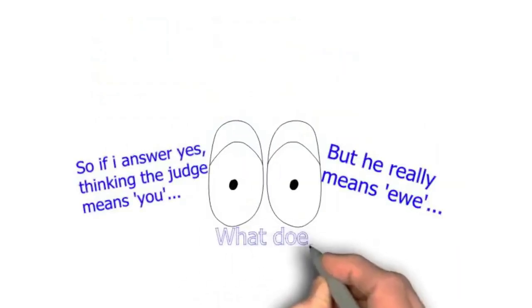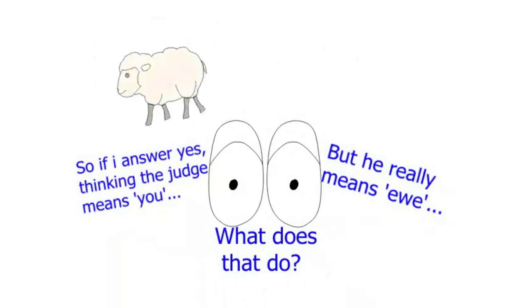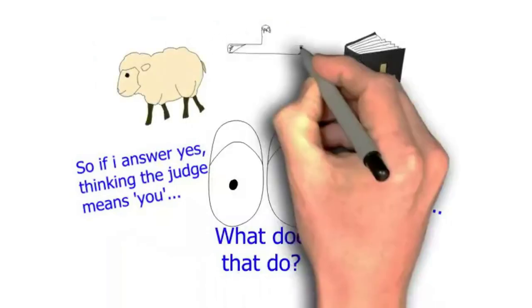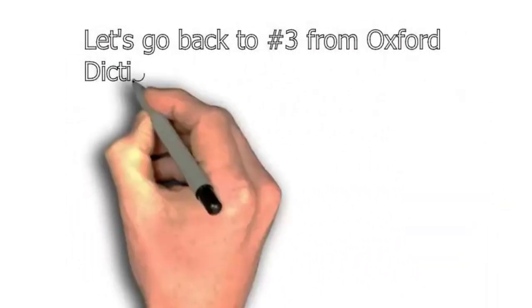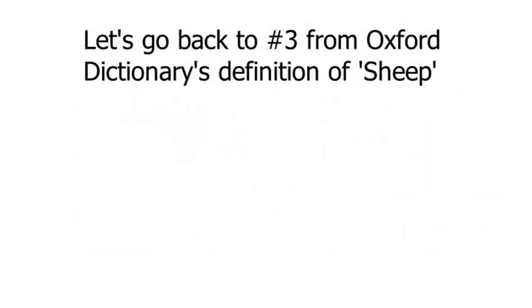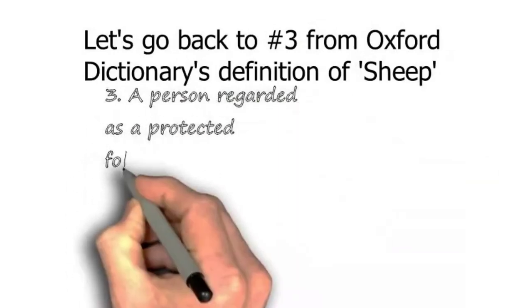No, I think that by you answering 'you,' you're automatically put into a position of the sacrificial aspect of the sacrificial lamb. And let's go back to this a second. It says a person regarded as a protected follower of God, and then there's an example in here.